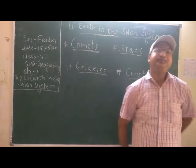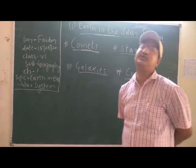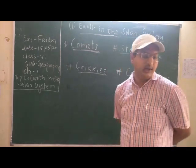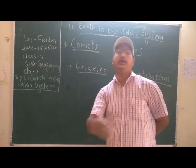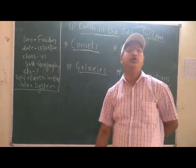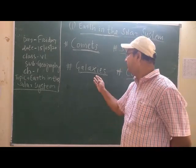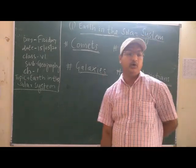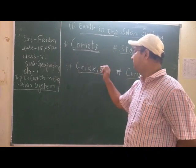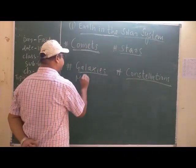Our solar system revolves around the sun in a galaxy known as the Milky Way. The Milky Way is the name of our galaxy — in Hindi it is known as Akash Ganga. The galaxy nearest to the Milky Way is the Andromeda galaxy.